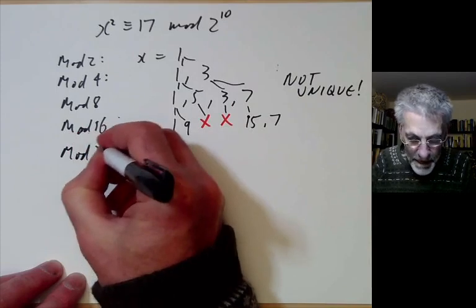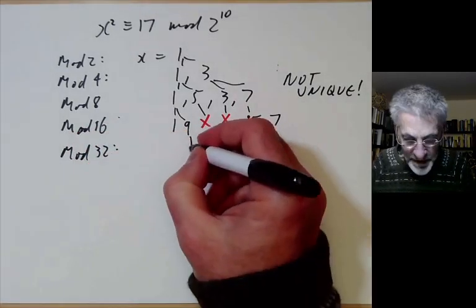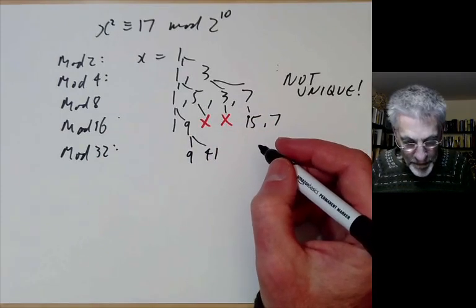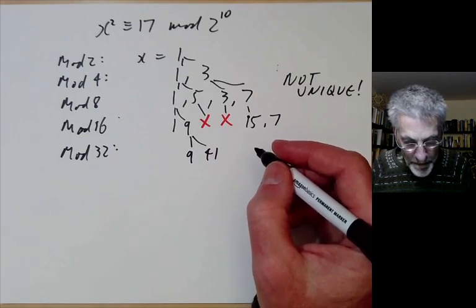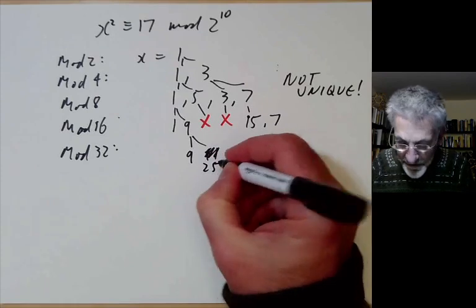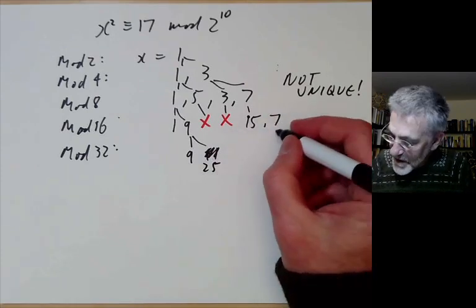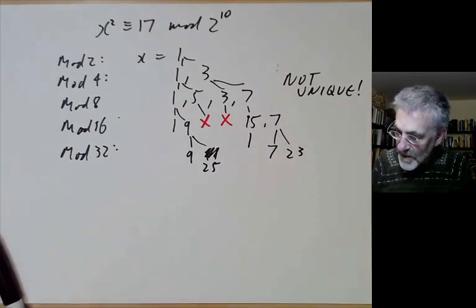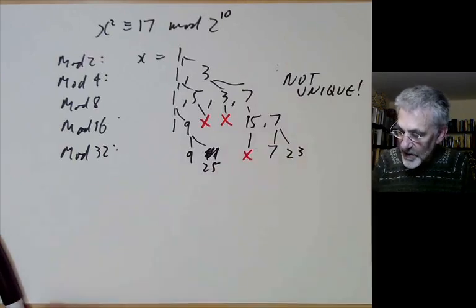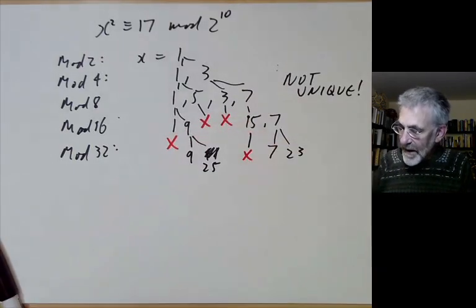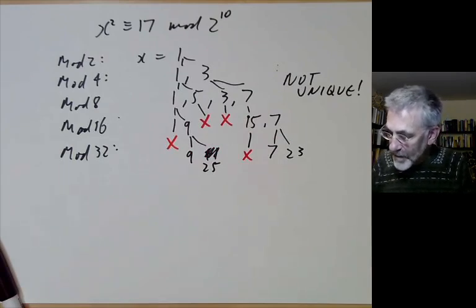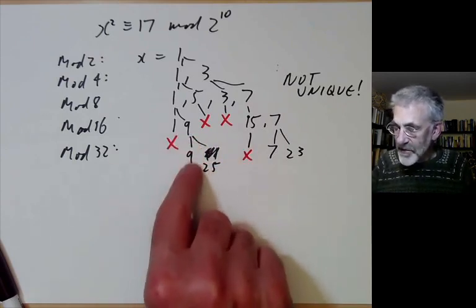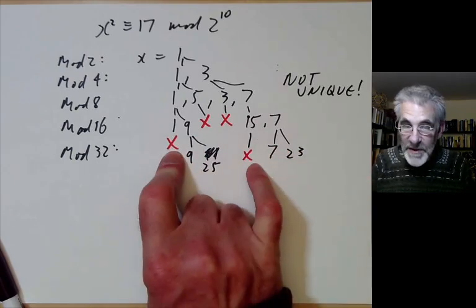Continuing to mod 32: 9 lifts to 9 or 25, and 7 lifts to 7 or 23, but 15 and 1 have no lifts. At each step, some solutions lift to two solutions and some have no lifts at all. This is much more complicated than the x² ≡ 3 mod 3^n case.